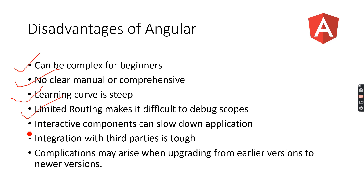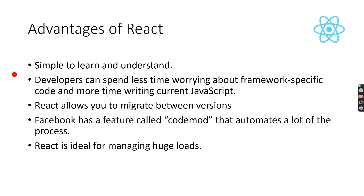If you use two-way binding in Angular, it creates interactive components that are somewhat slower compared to one-way binding components. Integrating Angular with third-party tools is also somewhat hard. Additionally, upgrading from one version to another gets complicated due to changes in libraries.